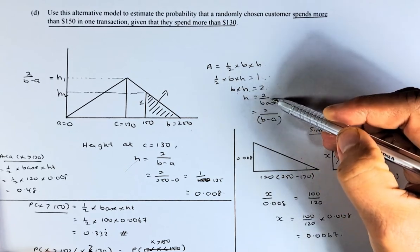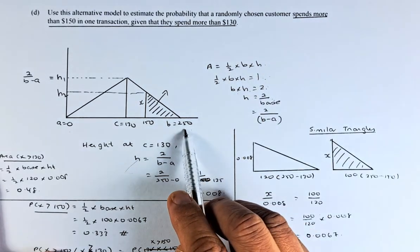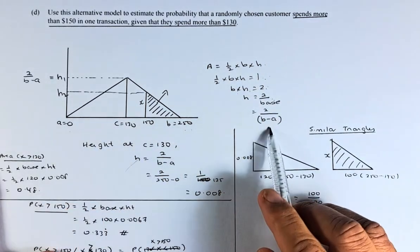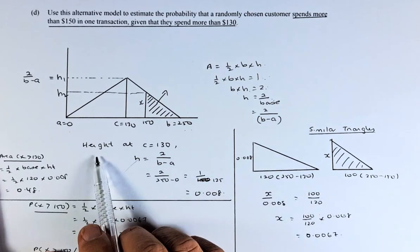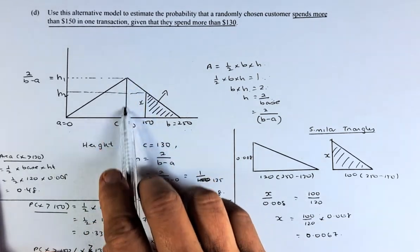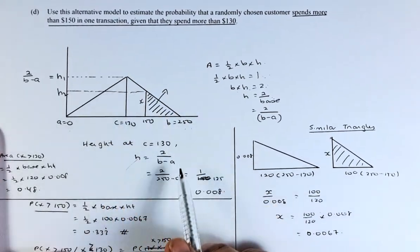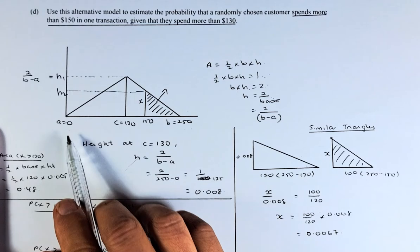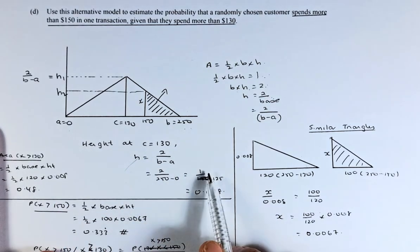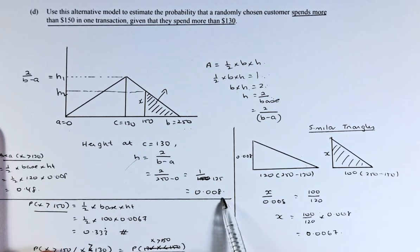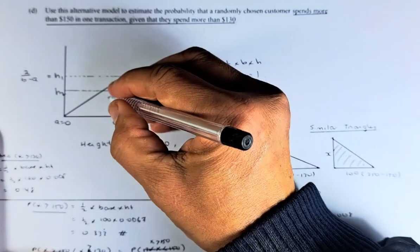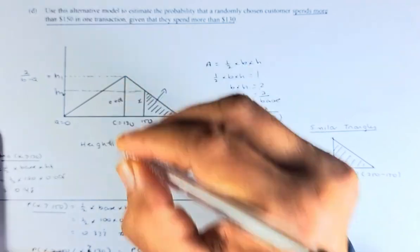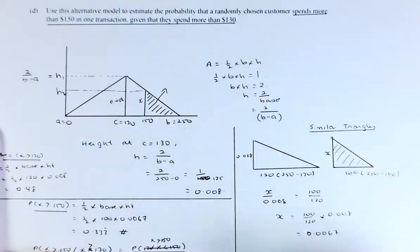B represents the base. In this case, the base is from $2.50 to 0, so the base is going to be $2.50. That's why we calculate the height at C or at $1.30. It's going to be 2 over B minus A. B is $2.50, A is 0. So 2 over 250 is 1 over 125 and the answer is 0.008. So this height here is 0.008, the height at C.